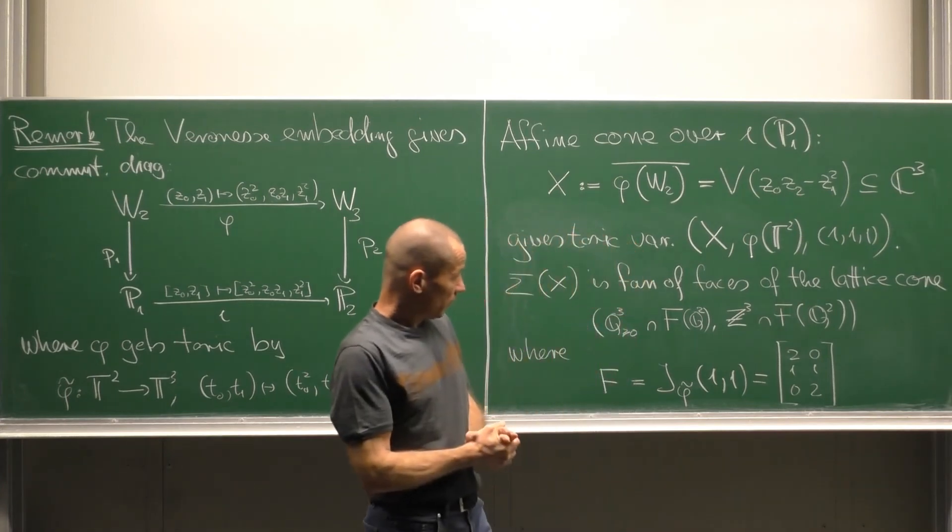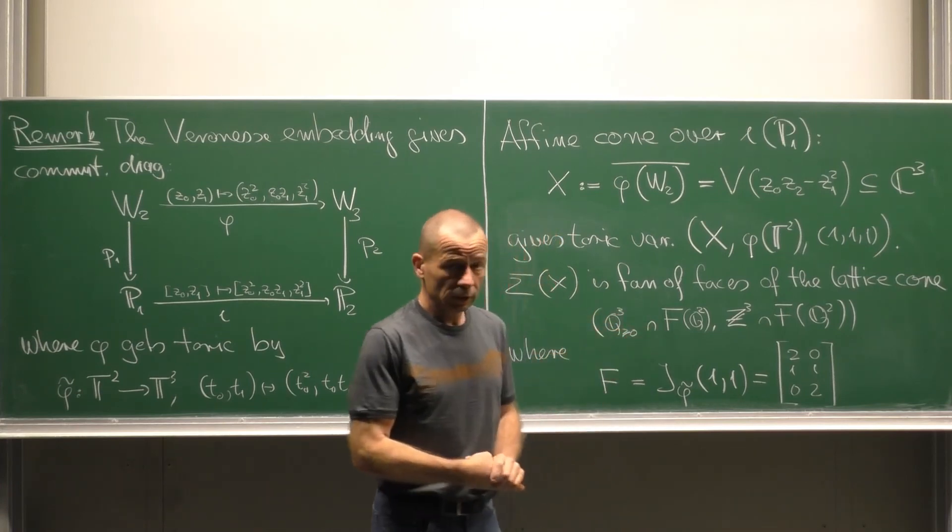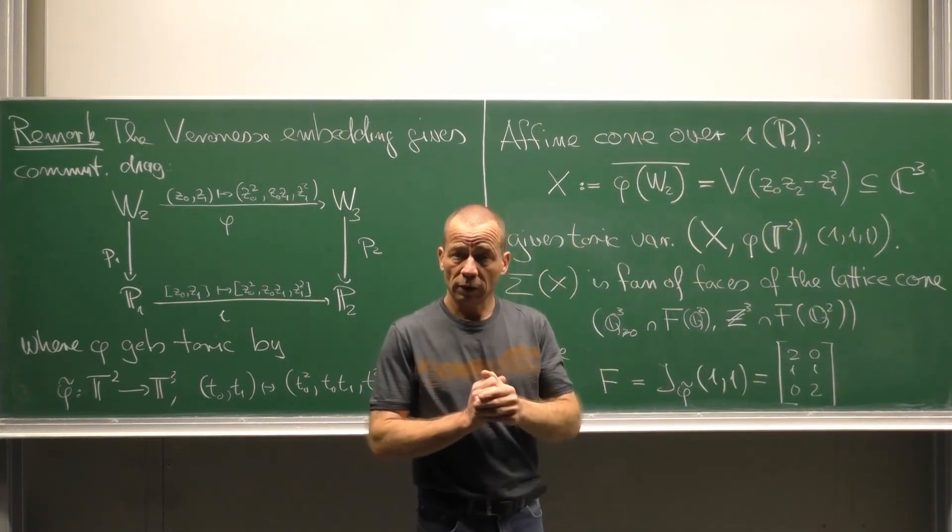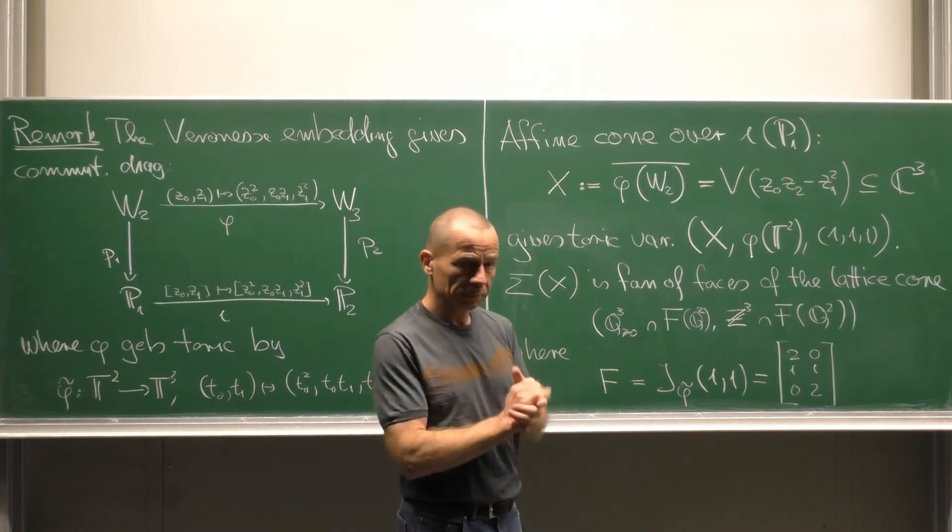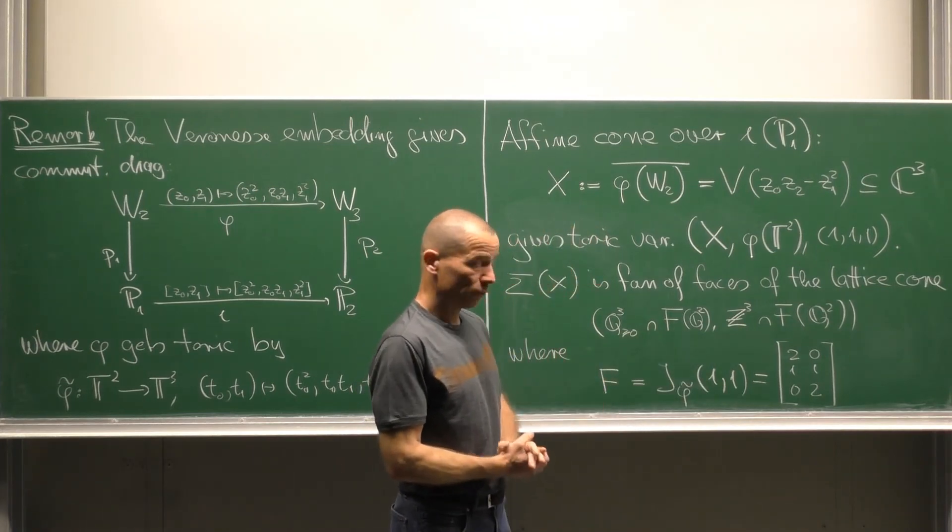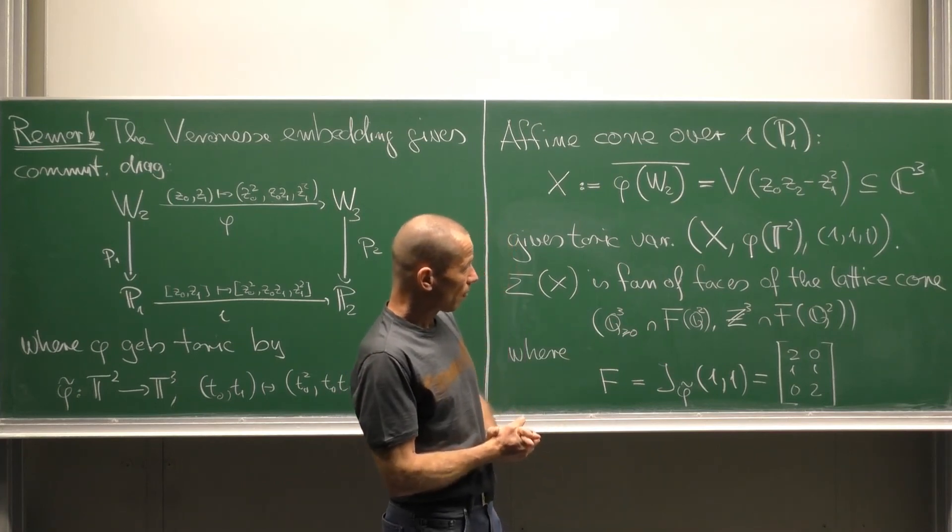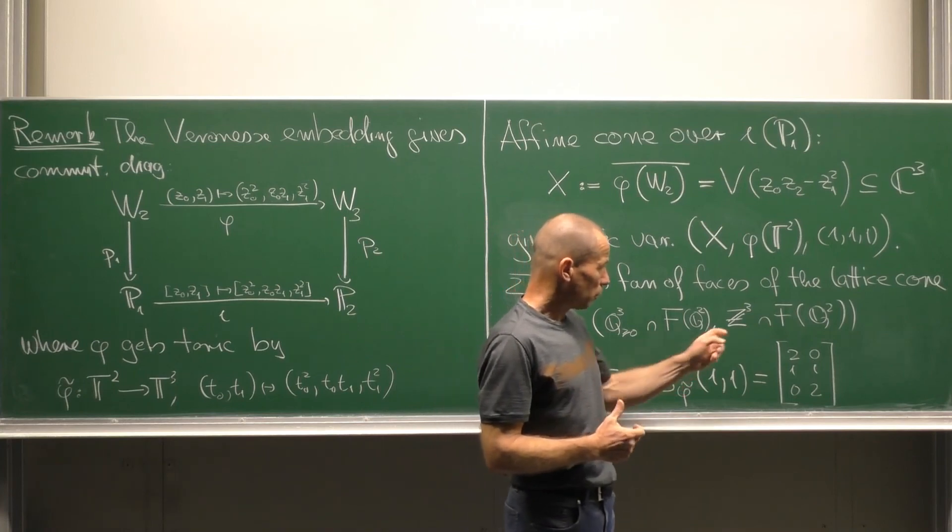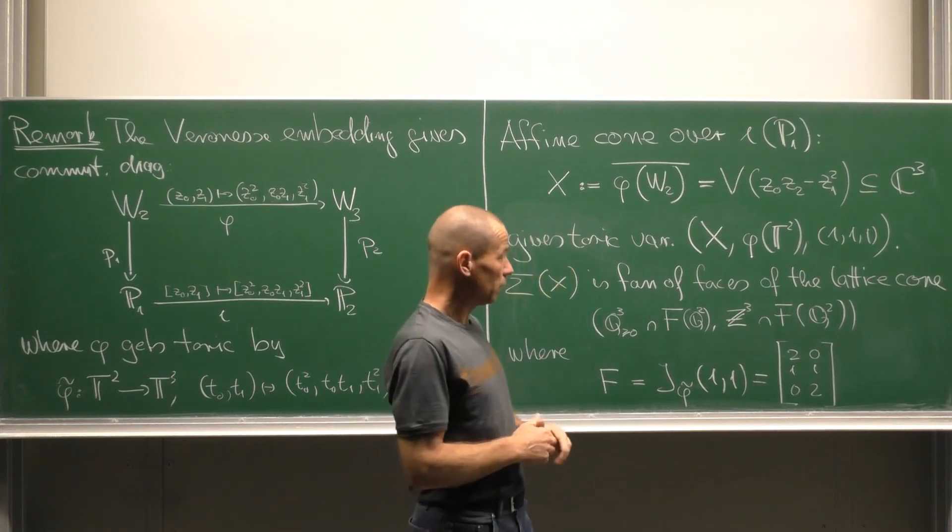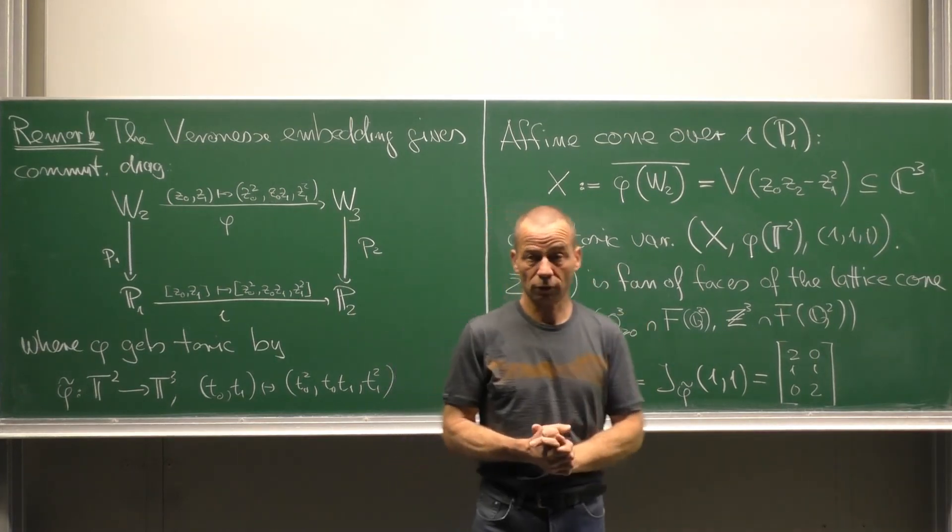Now one proceeds as follows. The cone is the octant in Q³ which basically determines us the toric variety C³ minus origin. And we have to intersect this with the image of Q² under F. This is a sub-vector space. This gives us a cone. The lattice structure is the following. We take Z³ intersected with this sub-vector space. This gives us a sub-lattice. So we have a lattice cone here and the statement is that σ(X) is the final faces of this lattice cone.